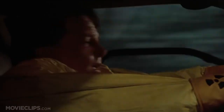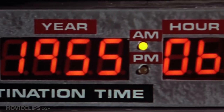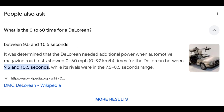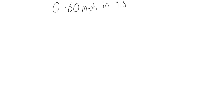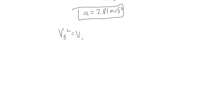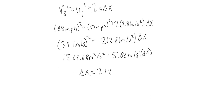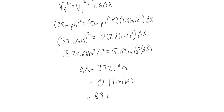To escape the Libyan terrorists, Marty needs to make his getaway in the DeLorean in the Twin Pines Mall parking lot. While driving away, he hits 88 miles per hour and travels to the past accidentally. But how much road did he need to hit 88 miles per hour? The DeLorean has a 0-60 of about 9.5 seconds. 60 miles per hour is 26.67 meters per second, giving an acceleration of about 2.81 meters per second squared. Using the third kinematic equation, 88 mph is 39.11 meters per second, and with an initial velocity of 0, the change in position is 272.19 meters — or 0.17 miles, or 897 feet 7 inches.